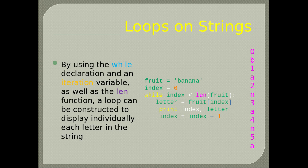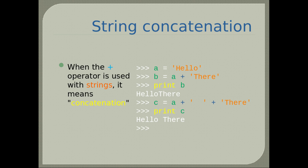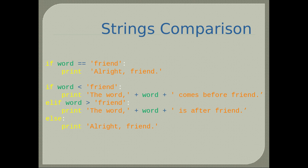The result is shown on the right side vertically. When the plus operator is used with strings it means concatenation. Here we compare the word inserted by the user to the word 'friend'. If the word comes before 'friend' in the dictionary, the program prints 'the word comes before friend'. Otherwise it prints 'the word is after friend', or 'all right friend' if the word equals 'friend'.